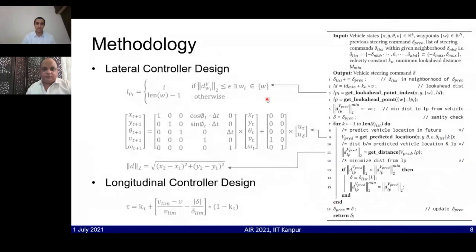Coming to the lateral and longitudinal control design, first I will speak about the lateral controller, which is the proximally optimal predictive control algorithm. First we initialize a list of steering commands in the near neighborhood of the previous one, and then we compute a lookahead distance based on the threshold value and the current speed of the vehicle to give it an adaptive nature.